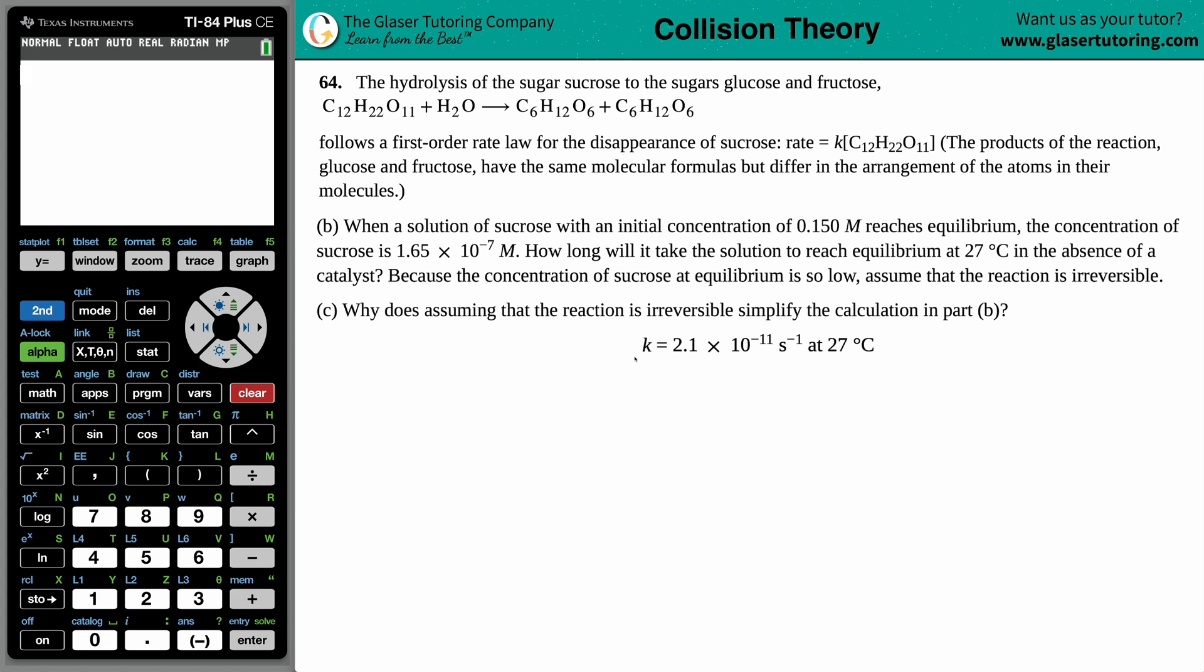Number 64, the hydrolysis of the sugar sucrose to the sugars glucose and fructose, is this balanced equation where we have the sucrose, which is C12H22O11 plus H2O, that's a hydrolysis reaction, just adding water, and we get down to it a glucose and a fructose molecule. Even though they both are C6H12O6, the structure differs by what they look like. The difference will be in their structure.